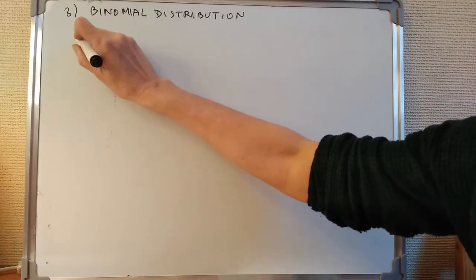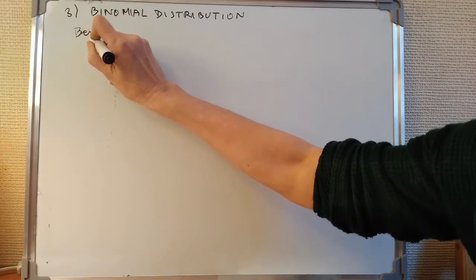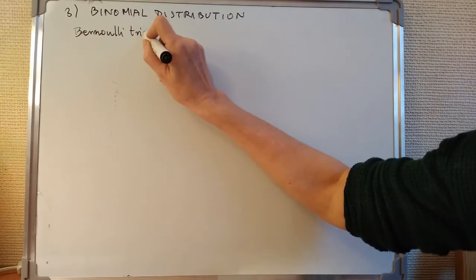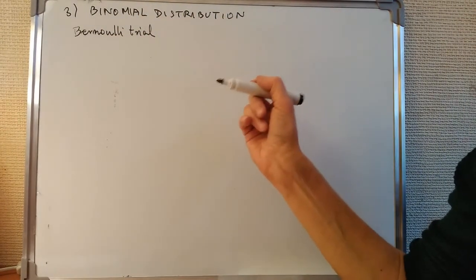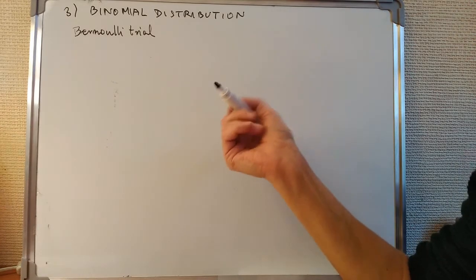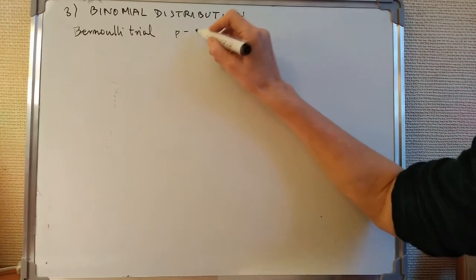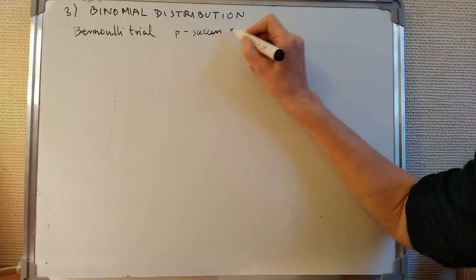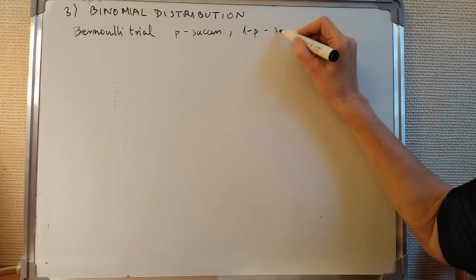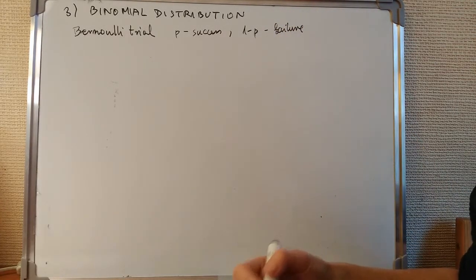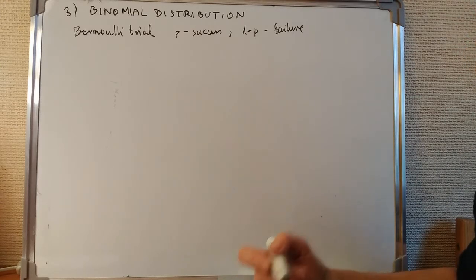First, what do we mean by a Bernoulli trial? It's the one that appeared in the first distribution. Either you have a success or a failure. P is the probability of success and Q (1 minus P) is the probability of failure. So we have an experience of something that is either a success or a failure.